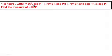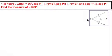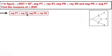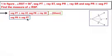Example 1: In a figure, angle RST is equal to 56 degrees. Segment PT is perpendicular to ST, segment PR is perpendicular to SR, and segment PR is congruent to segment PT. Find the measure of angle RSP. Solution: Segment PT is perpendicular to ST and segment PR is perpendicular to SR — given. Segment PR is congruent to segment PT — given.